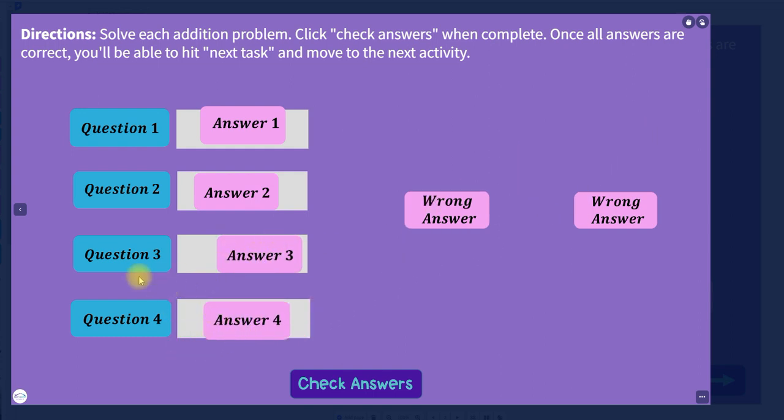Those are all correct because I've labeled them question three, answer three, and such. So I hit check answers. The green check marks come up indicating I got them all correct, and I receive the next task button that lets me move to the next slide.